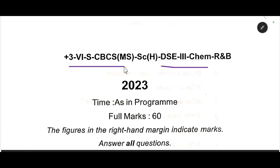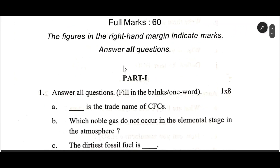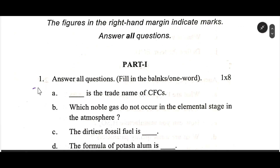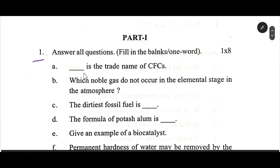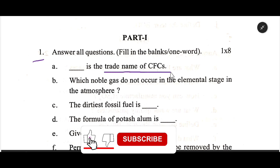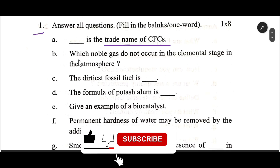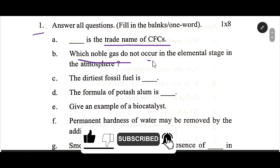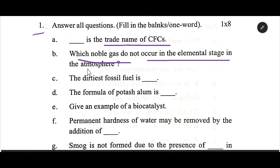DSC-3 Chemistry 106 semester. Question 1: Dash is the trade name of CFCs. Which noble gas does not occur in the elemental state in the atmosphere?